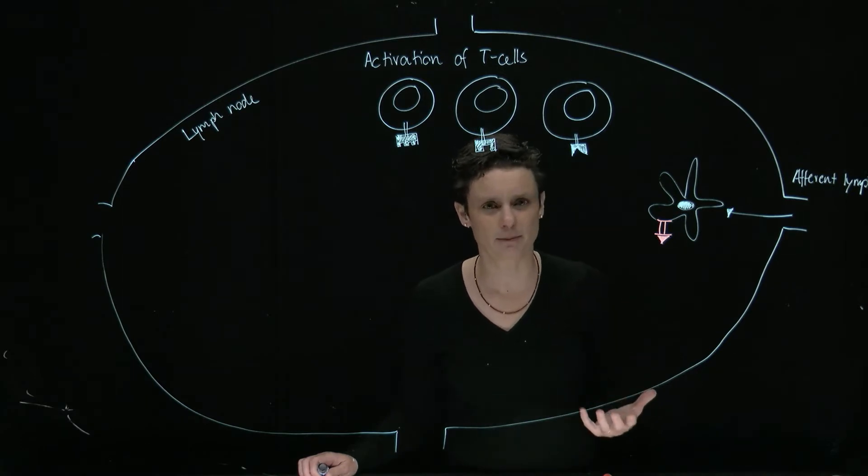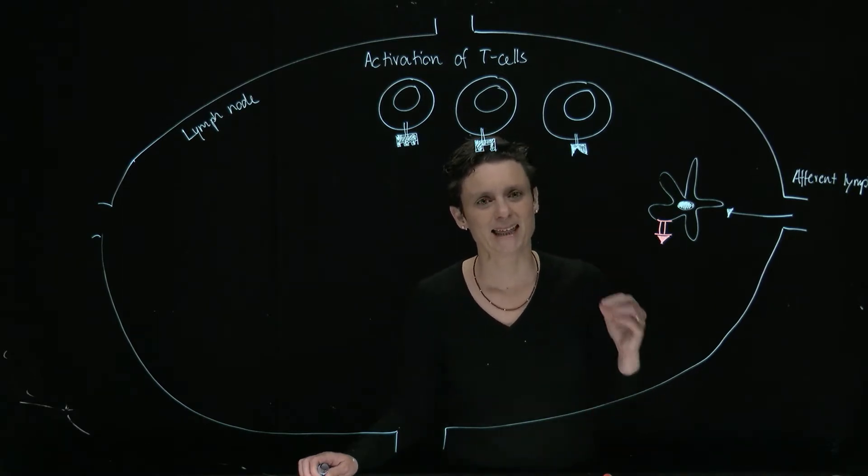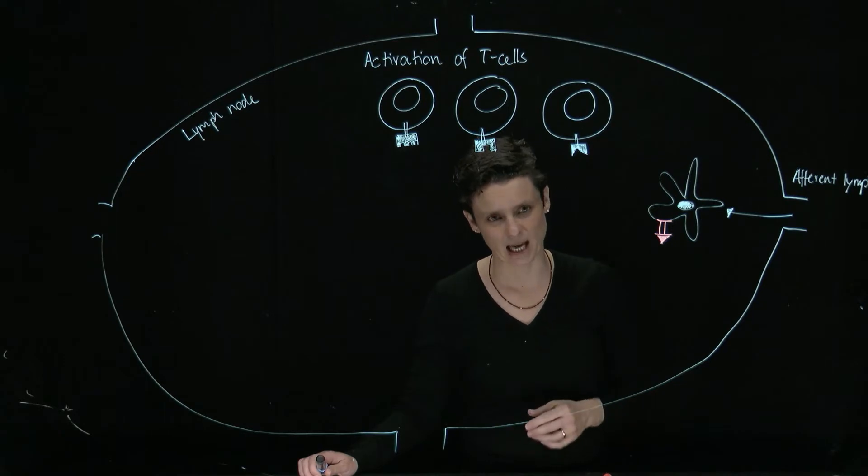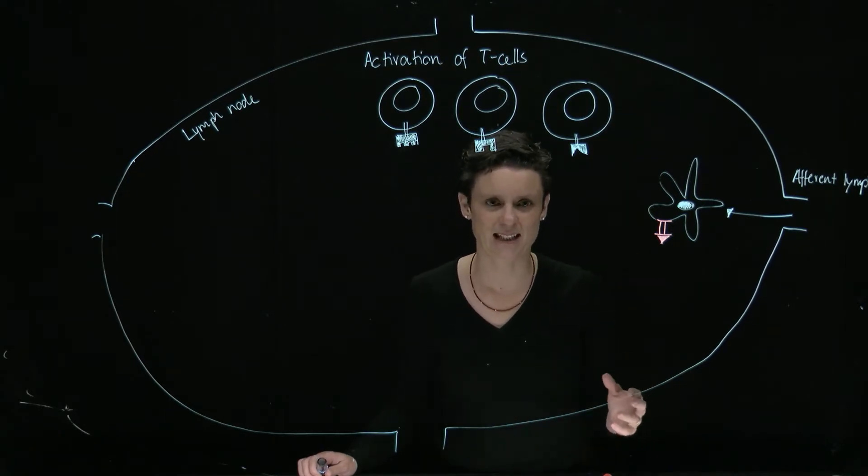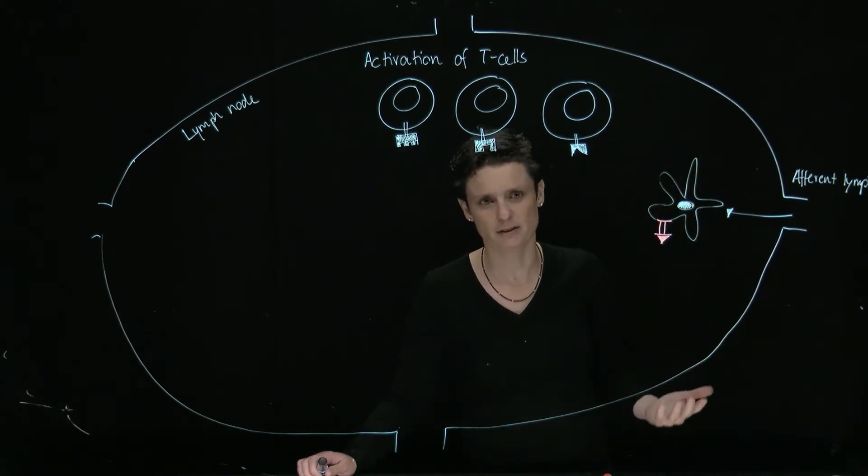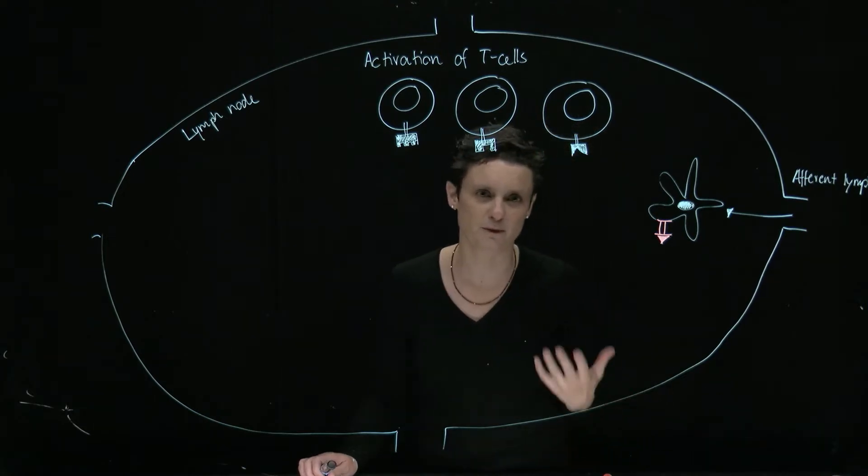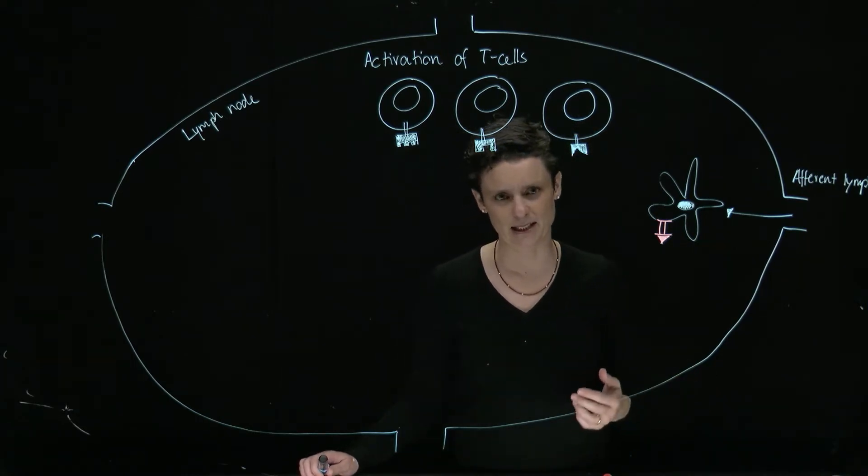And the dendritic cell is going to be particularly important because this is a connector between the innate and the adaptive immune system. This is a cell that's going to personally travel to the lymph node in order to find, to get help and to activate T cells.